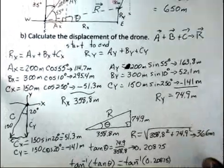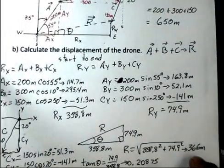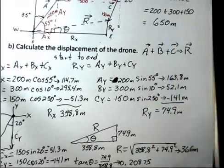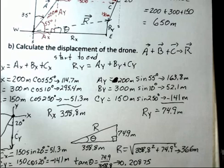You'll notice here the displacement magnitude, 366, is smaller than the distance number, 650 meters. That will be the case unless all your vectors are in a straight line and all positive.